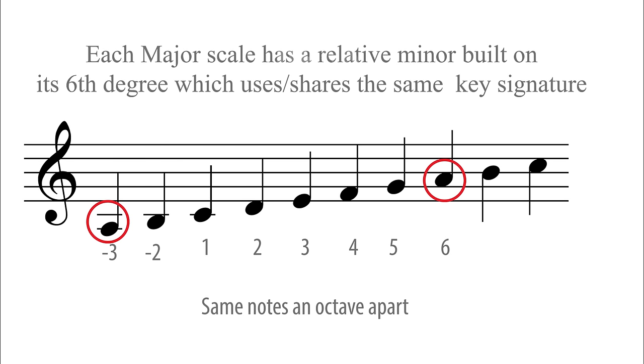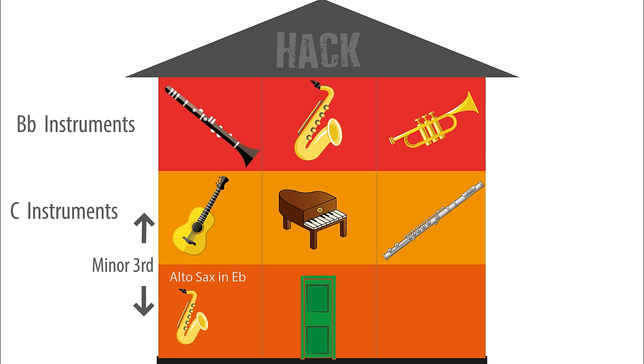Now, what about when the guitar plays, for instance, B-flat? The alto sax will need to play a minor third below, which is G. So that's the Eb transposing hack.